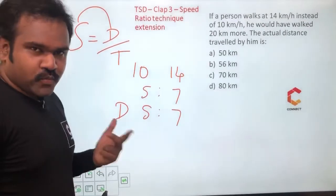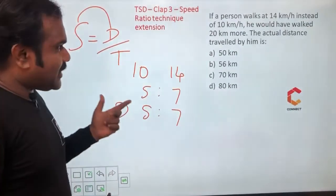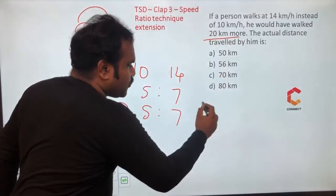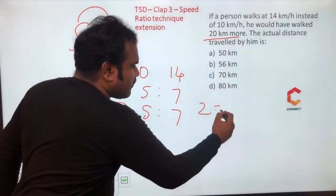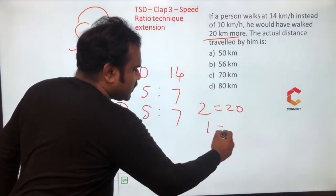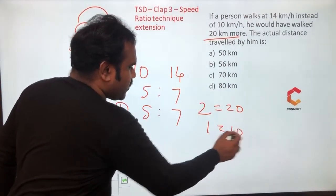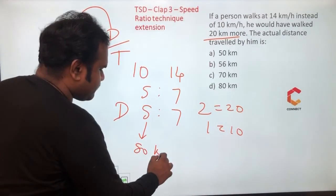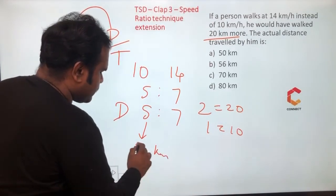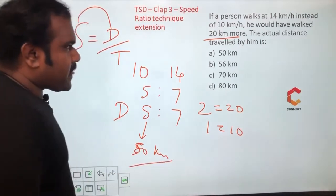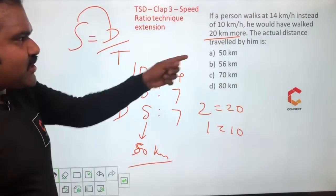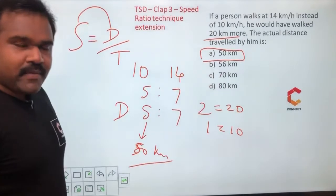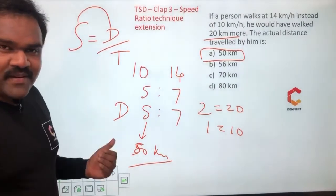The difference is two parts, and that two parts is reflected as 20 km more. So two parts equals 20 km, meaning one part equals 10 km. One part is 10 km means five parts equals 50 km. So the actual distance traveled by him is 50 km.